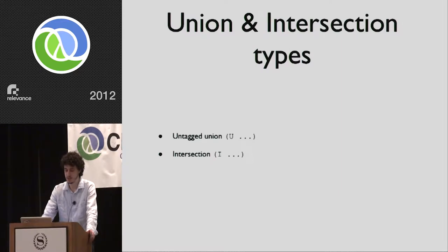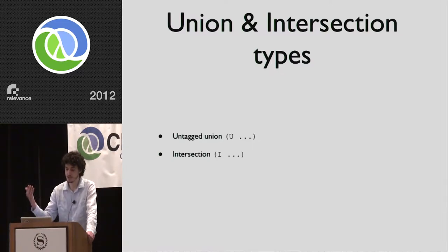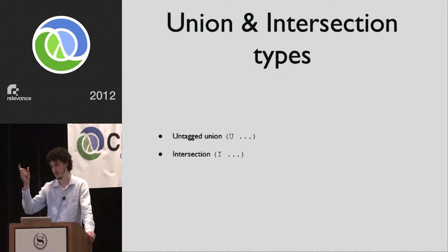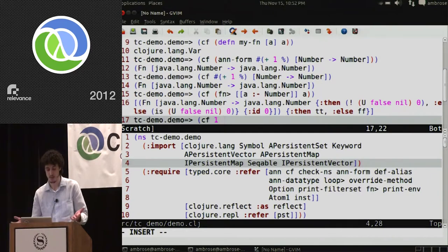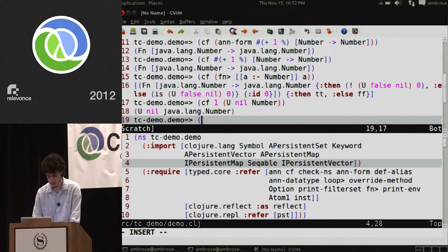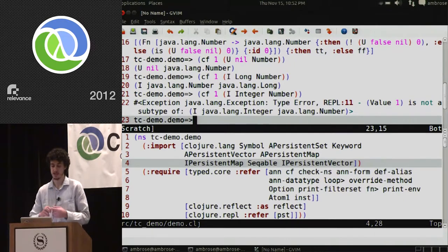Type Closure supports union and intersection types. We have an untagged union type — a union type has a set of members and an expression is of that type if it is of at least one member. The dual is the intersection type: an expression of an intersection type must be a subtype of each of its members. For example, we can assign 1 the union type of nil-or-Number since 1 is a Number. We can also say 1 is the intersection of Long and Number, since it's both. But if we say it's a Java.lang.Integer, we get a type error, because 1 is a Long, not an Integer.